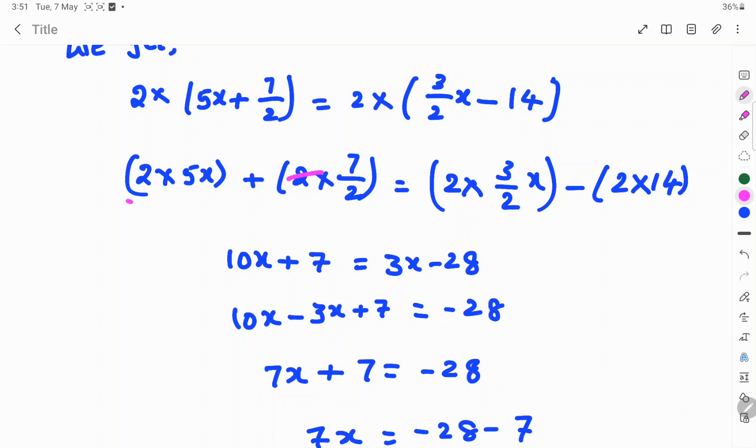10x plus here 2, 2 will be cancelled, then 7 equals 2, 2 will be cancelled. 3 into x, 3x minus 2×14 is 28.